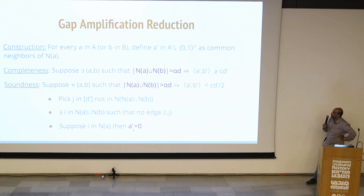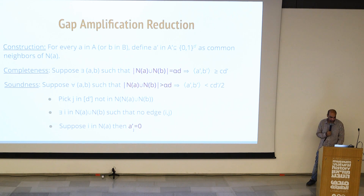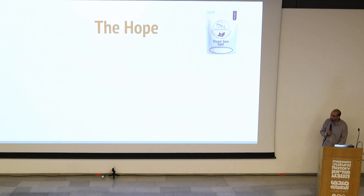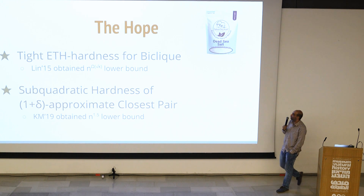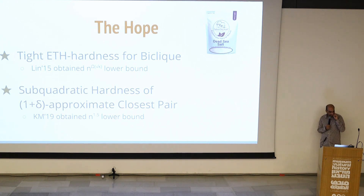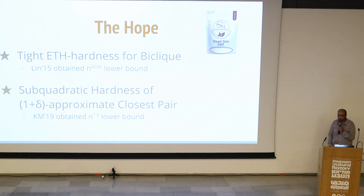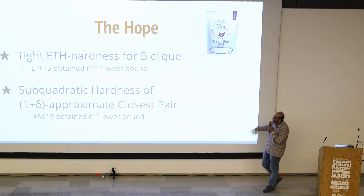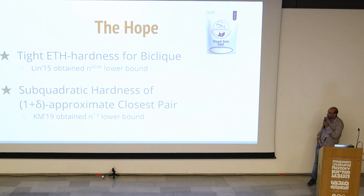In general, this gap amplification technique based on random self-reduction — composing with a random graph — can be useful for proving more things. A couple of open questions: under ETH, Lin only obtained for bi-clique a lower bound of N to the square root of K, but we should be able to get N to the K. And for 1+delta approximate closest pair we know a lower bound of N to the 1.5, but since these are all self-reductions we should be able to get an N-squared type lower bound.